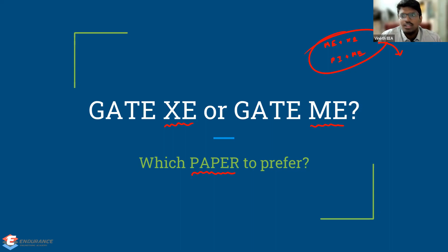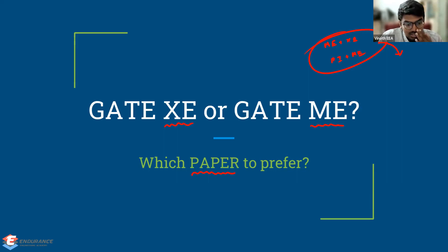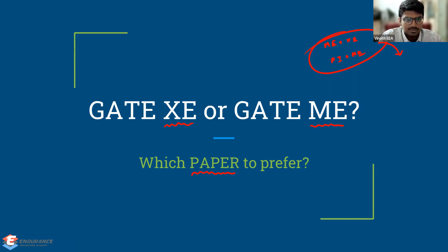Once after going through that video and taking a decision that you need to go for ME and XC, the question is which one should be your first priority and which one the second. This first and second priority doesn't have anything to do with your exam application — you can give ME or XC as your first preference in the form, it doesn't matter. The preference here is related to your mindset — which one you are going to focus on more.